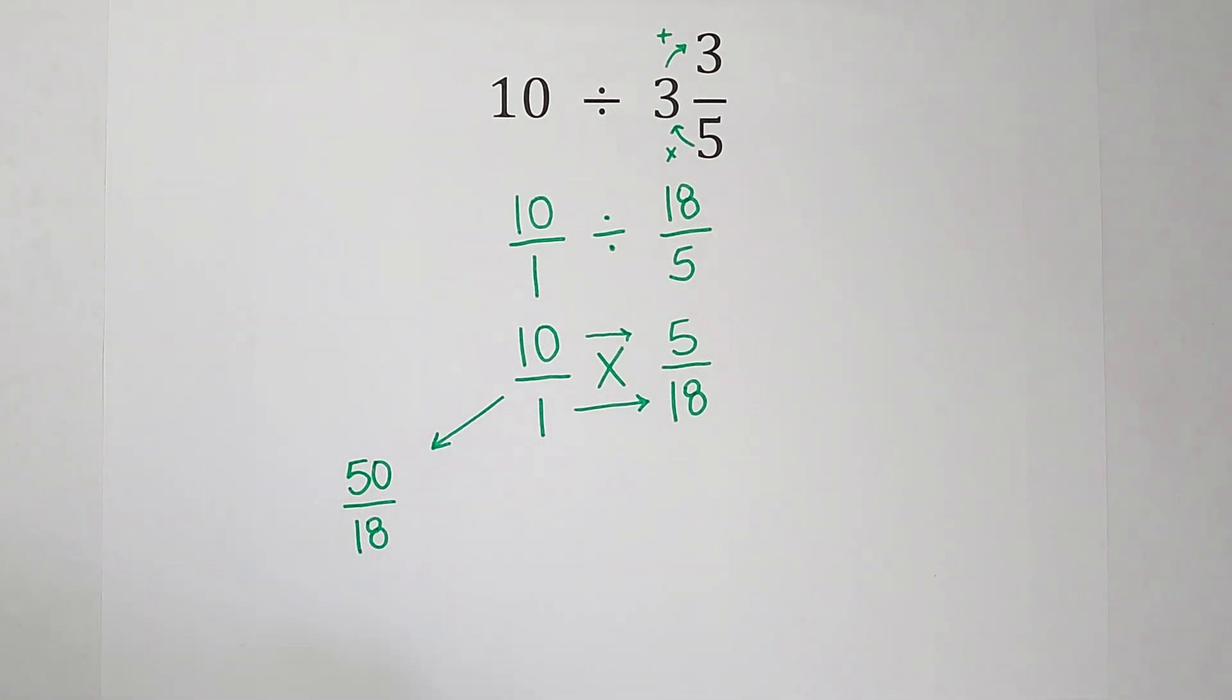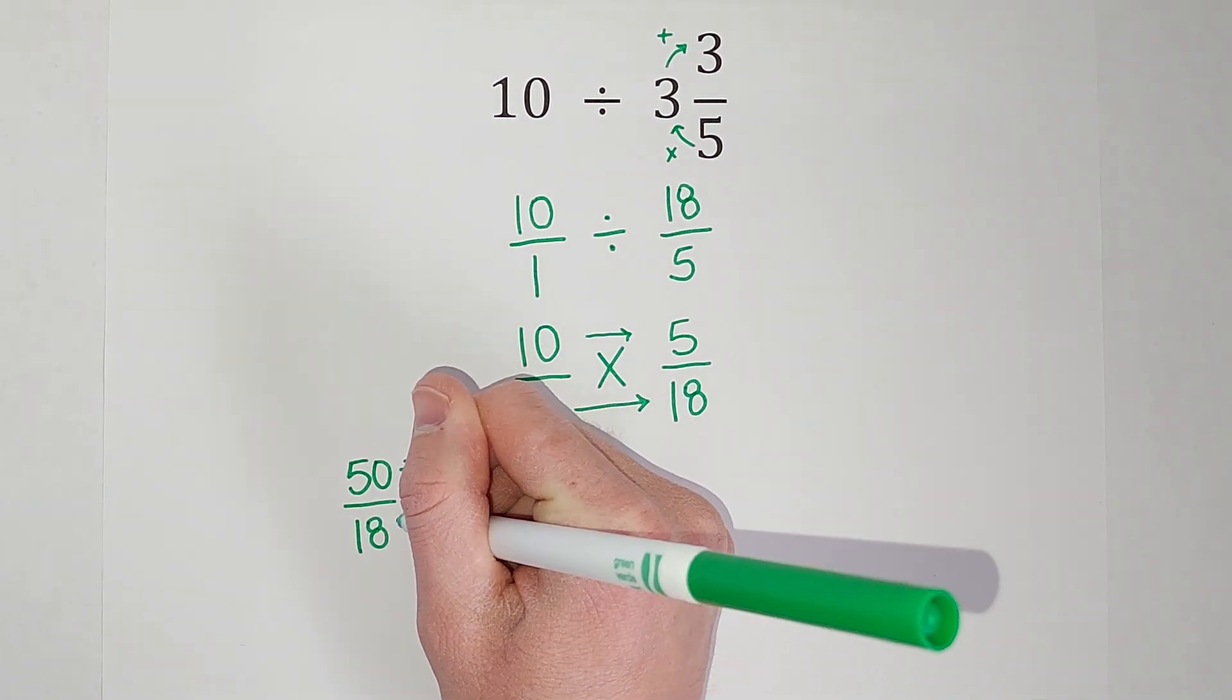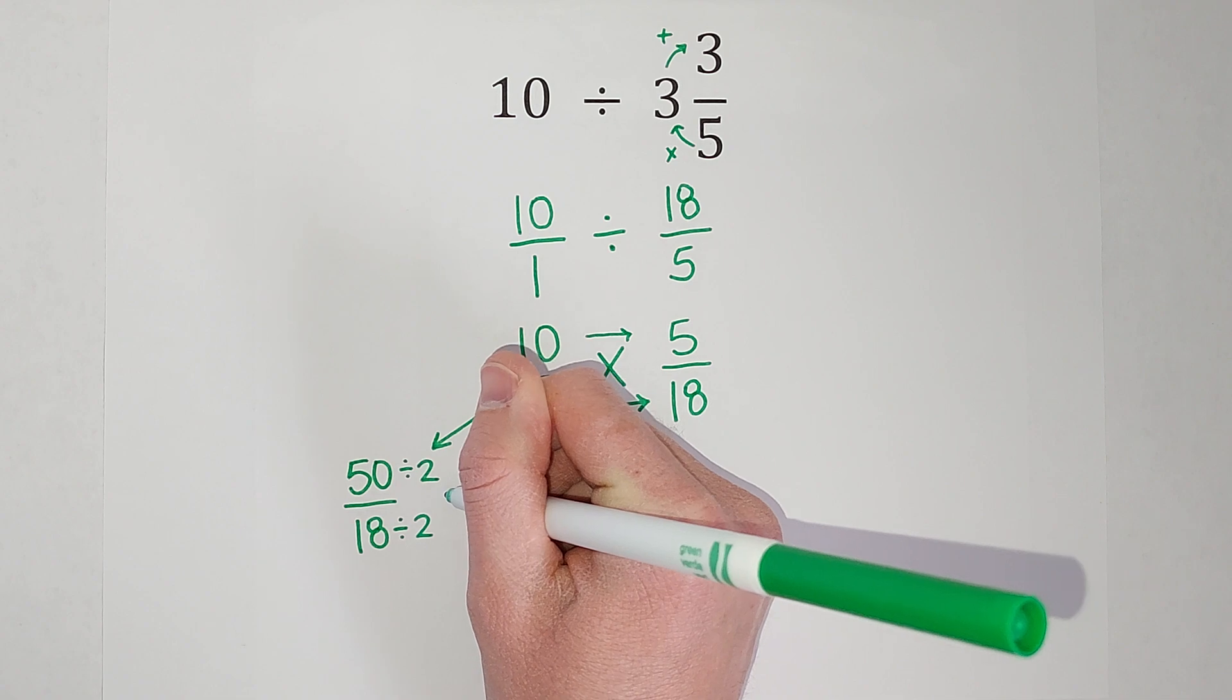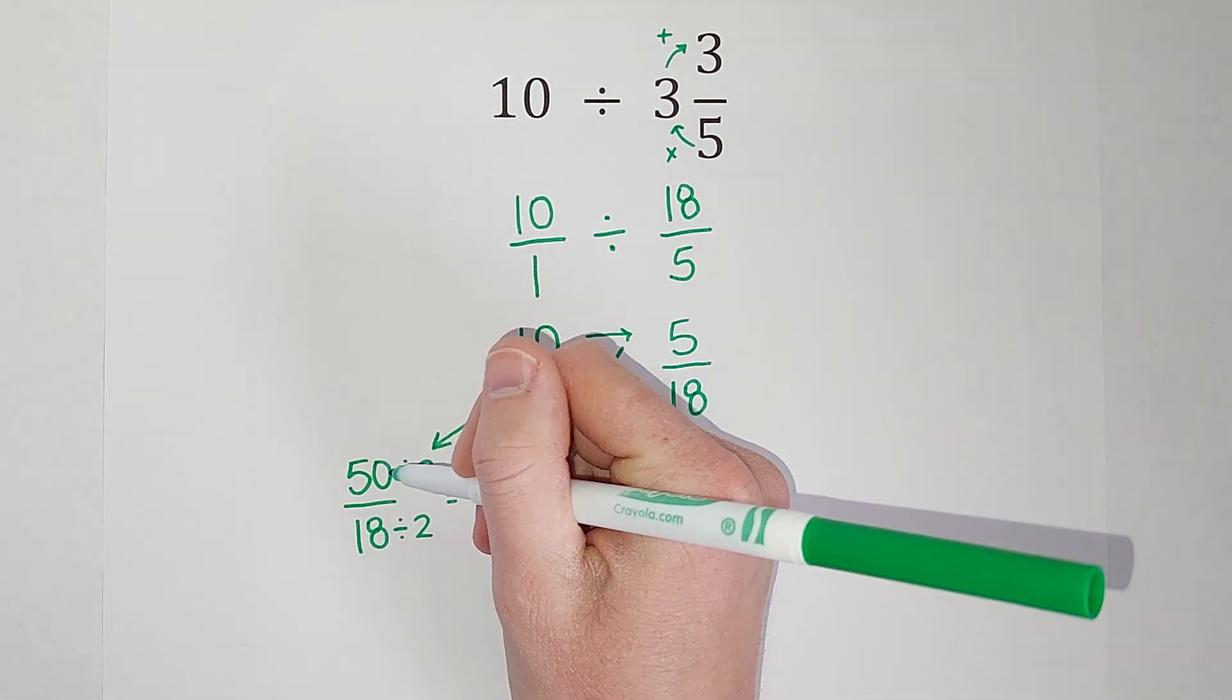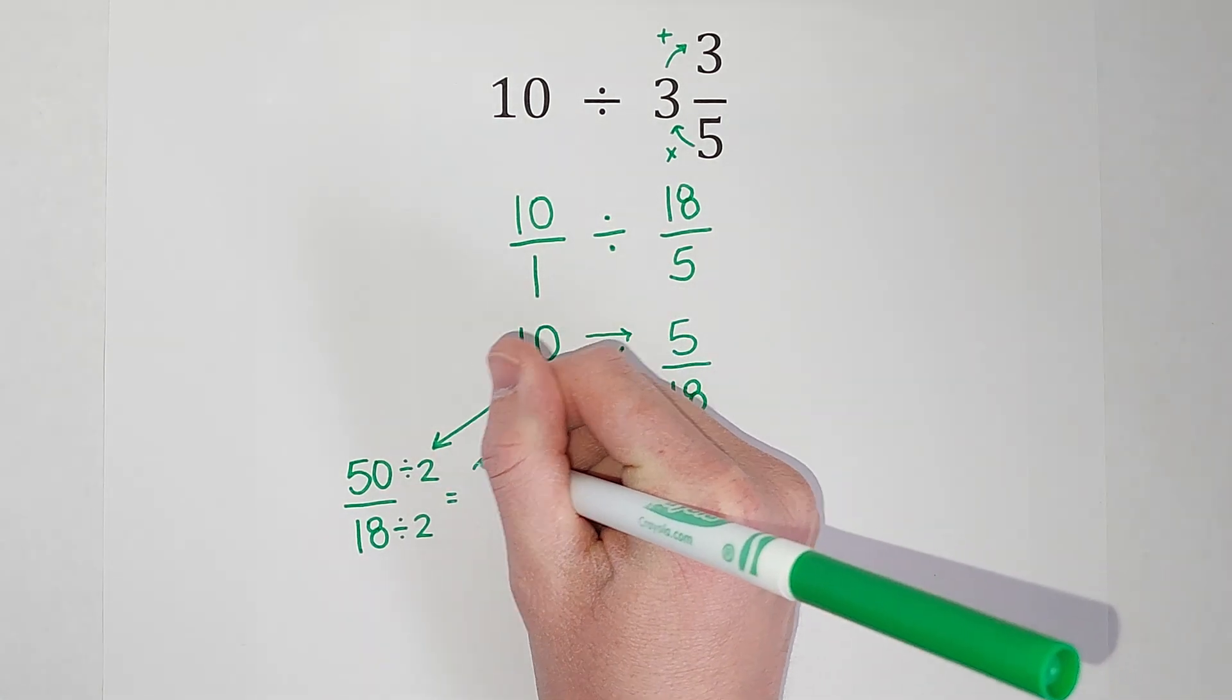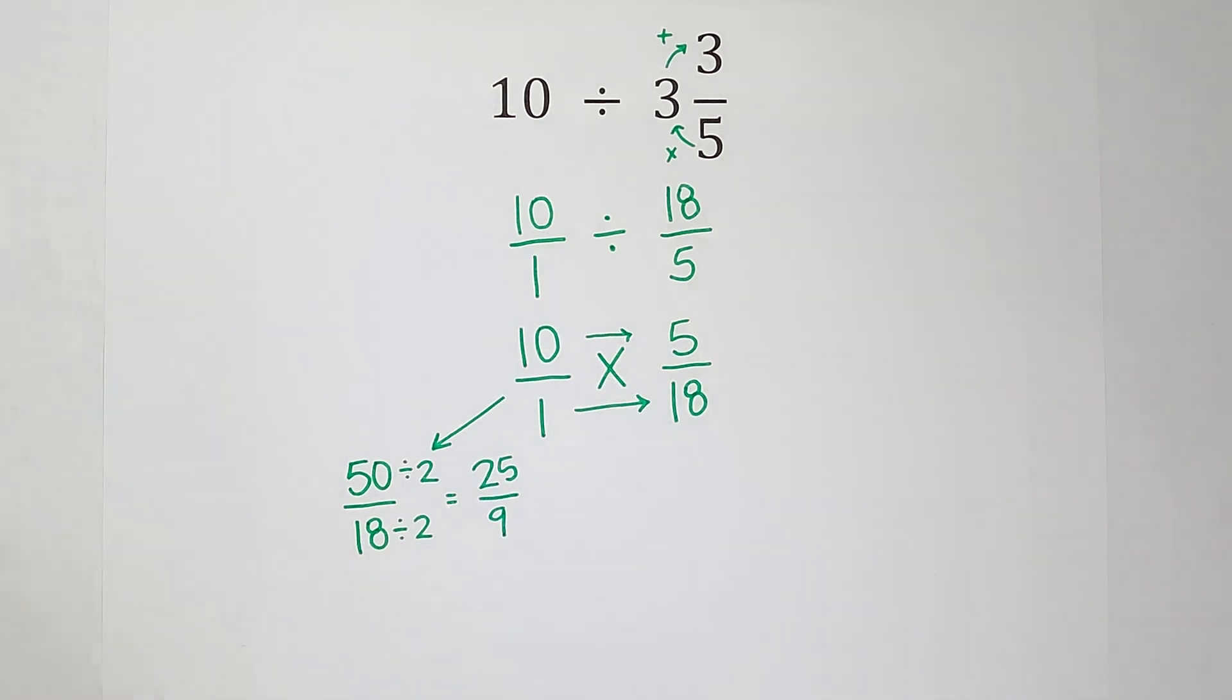So I get 50/18, but we always want to check and see if it simplifies. So I ask myself, what goes into both 50 and 18? Well, 2 goes into both of them. So I'm going to simplify this by taking a 2 out from the top and bottom. If you're not super familiar with simplifying fractions, or if you need a review, I'll link it in the corner. But 50 divided by 2 gives me 25, 18 divided by 2 gives me 9.